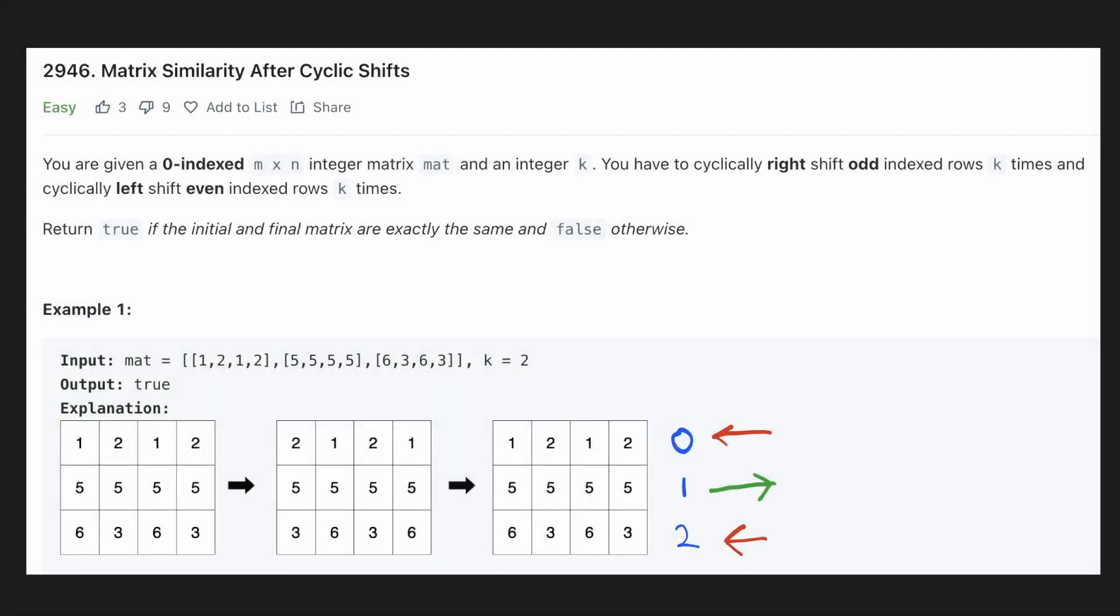Hello everyone, in this problem we are given a matrix of size n by n and we have to make k rotations for each element such that the elements on the even rows will shift left and the elements on the odd rows will shift right.